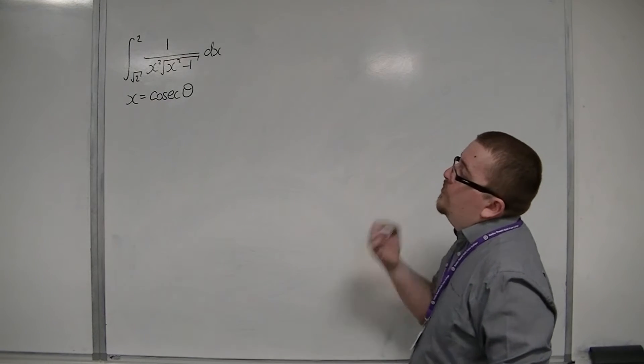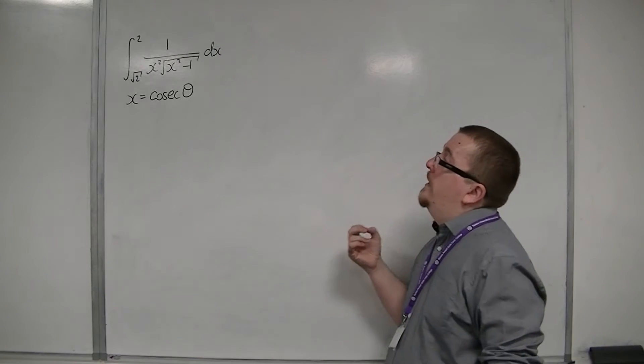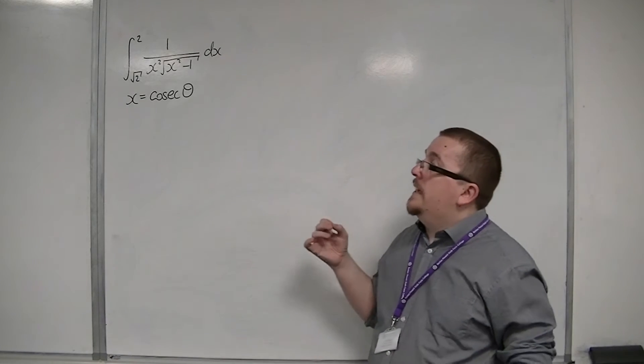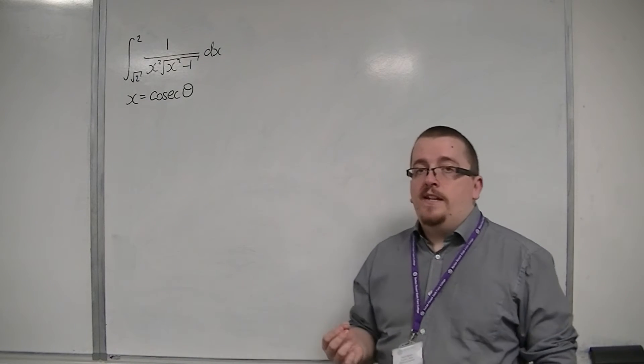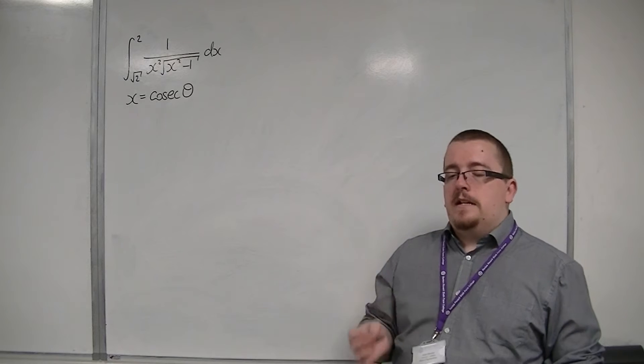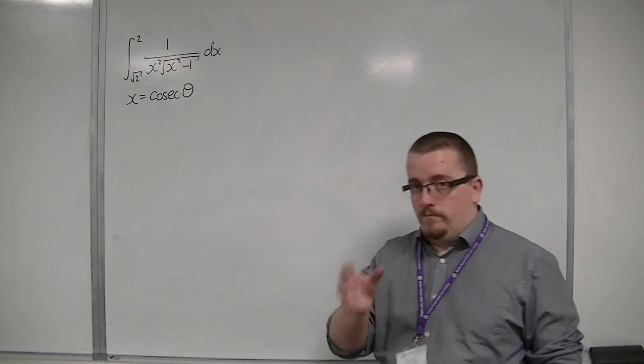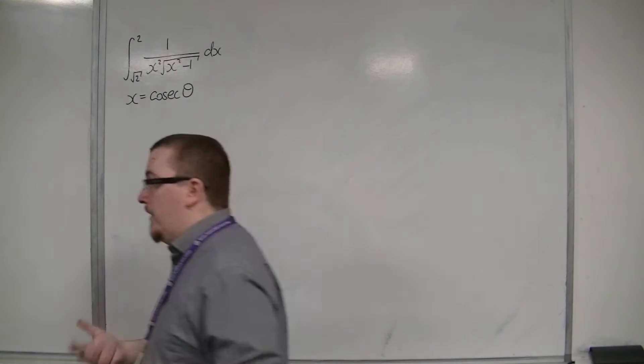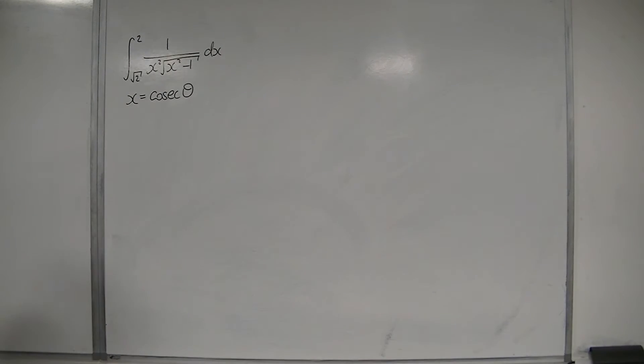This is the integral between root 2 and 2 of 1 over x squared, square root of x squared minus 1 dx. It doesn't look particularly horrible, but it does take a while to go through. It goes through the same process as usual, so see if you can follow it.